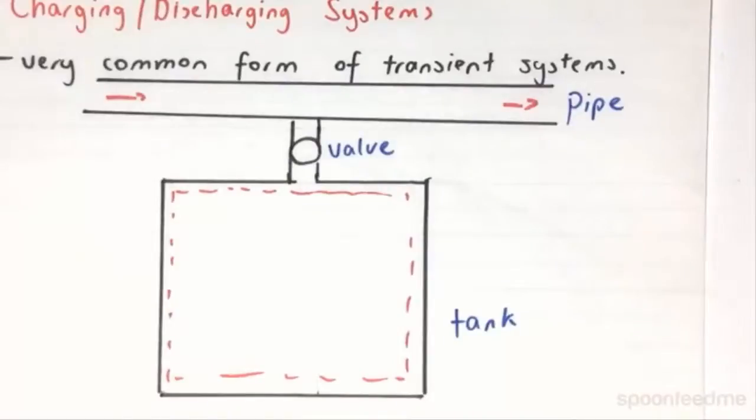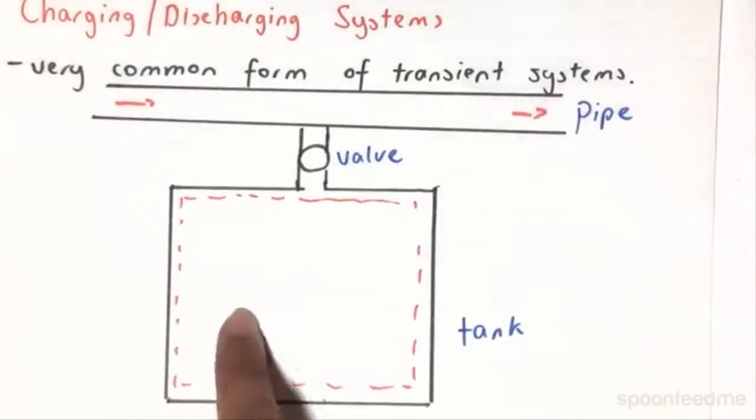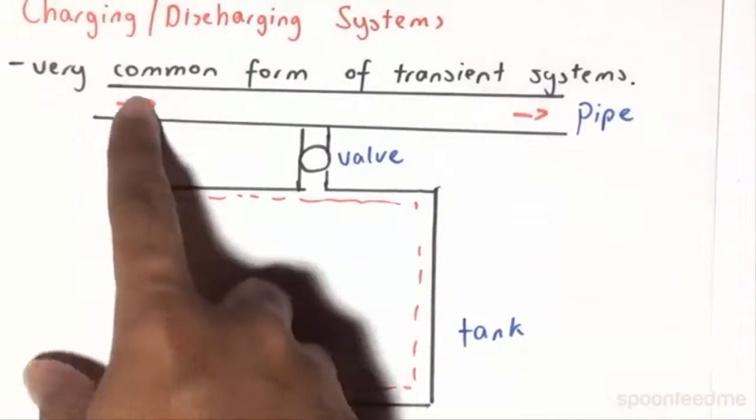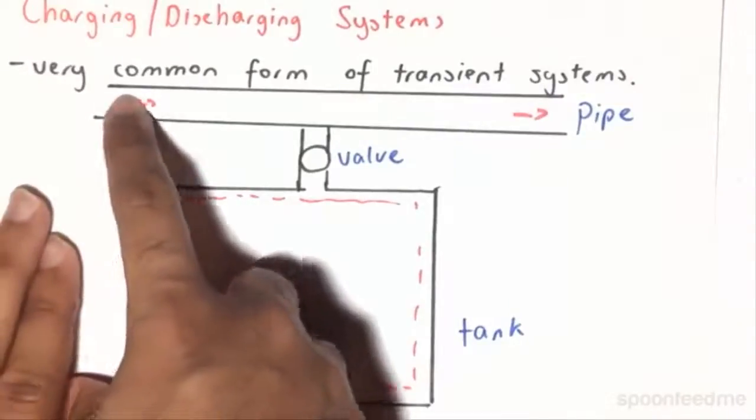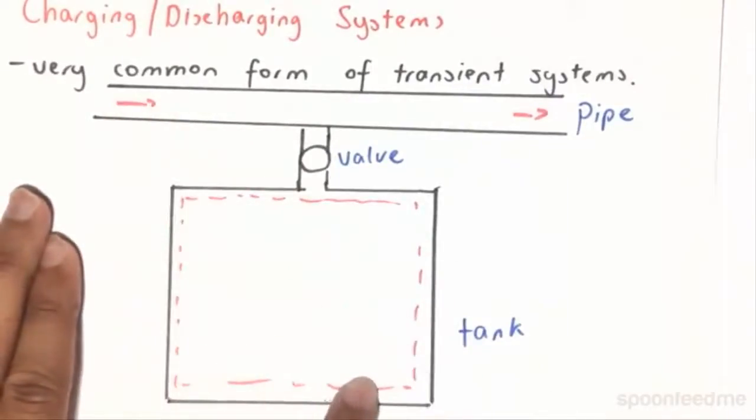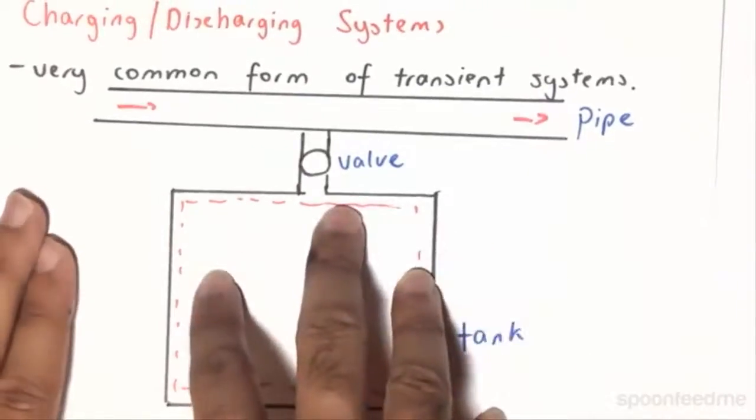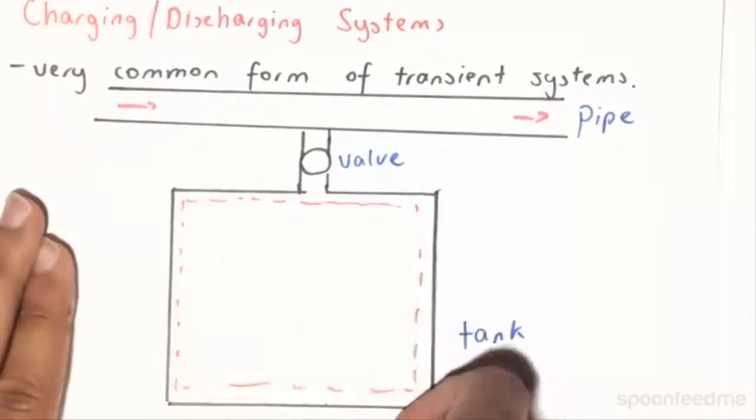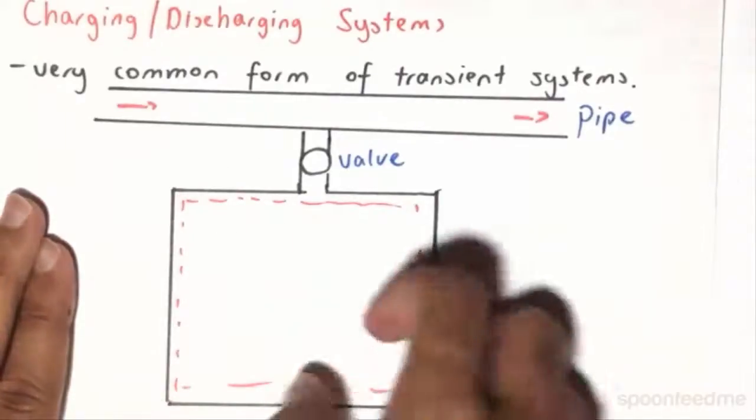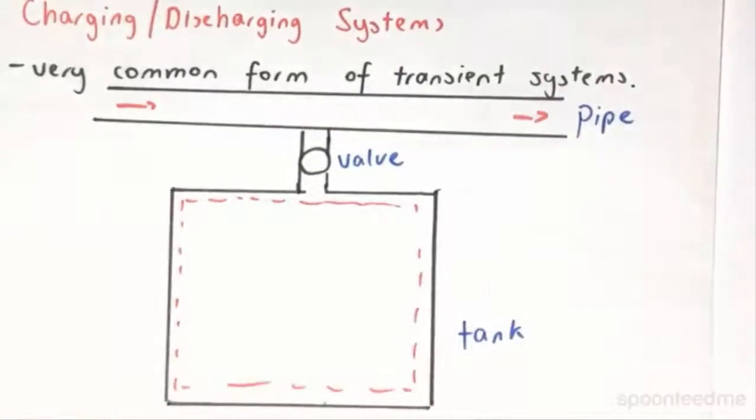So for charging systems, we won't have anything within this tank, and basically the pipe, the fluid within the pipe, is going to charge the tank within here. So it's going to put in some fluid within this tank. And over a set period of time, the valve is going to open, and then after some time has elapsed, the valve will close, and then we will do our analysis.